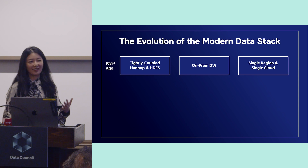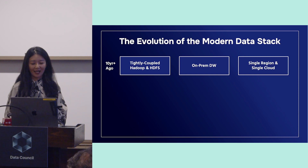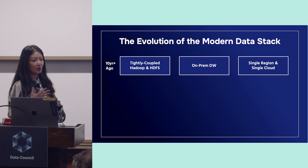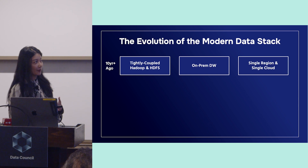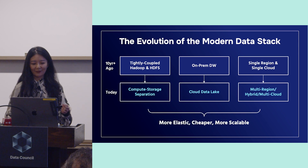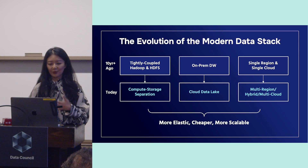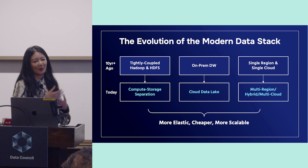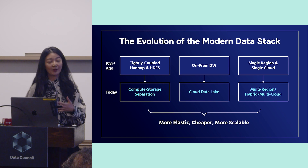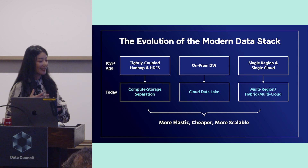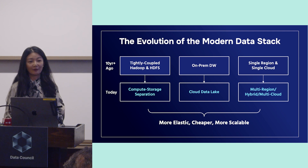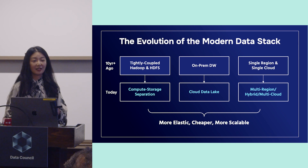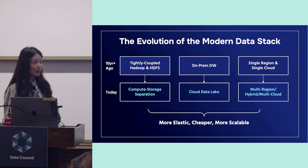We had the on-prem data warehouse, also called EDW, and we usually used a single-region data center or single-region private cloud. Then things changed. Nowadays we have compute-storage separation, and you were talking about disaggregation of compute and storage. You enjoy the benefits of scaling them independently — you don't have to pay to scale them together.